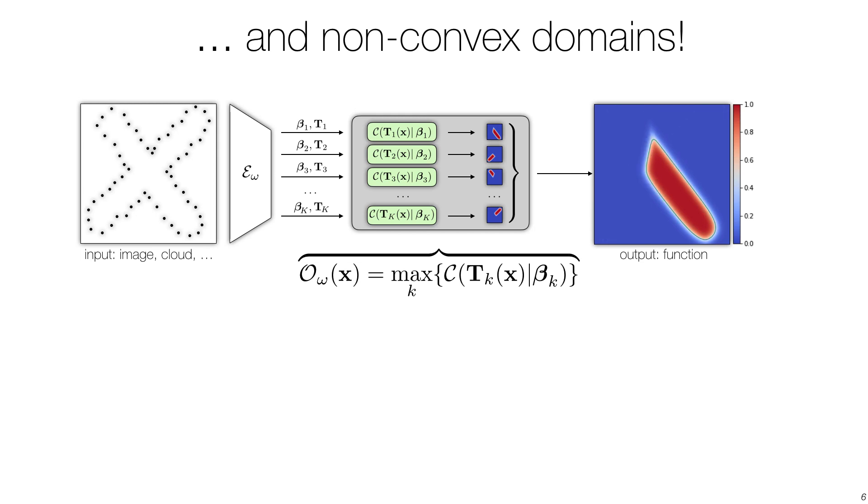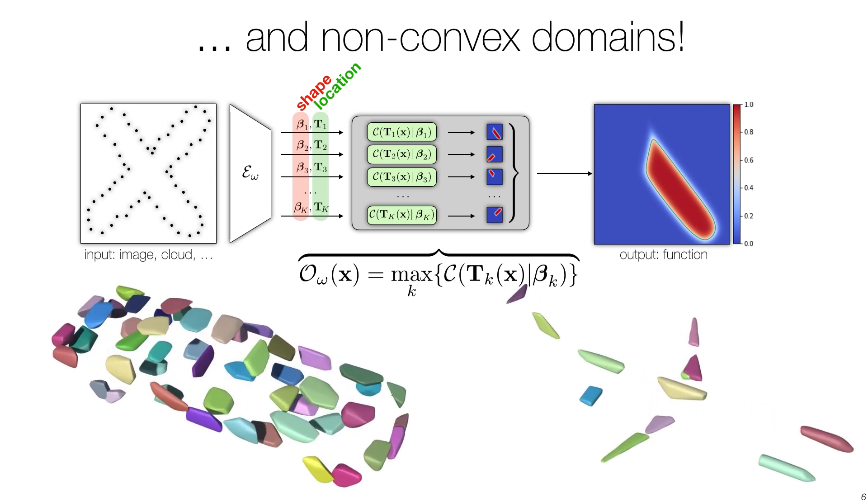In our encoder, we output two sets of quantities: parameters beta that correspond to the shape of convexes, and transformations t to express the location in space. As we work with functions, everything generalizes effortlessly to 3D. Here we show two example 3D decompositions.